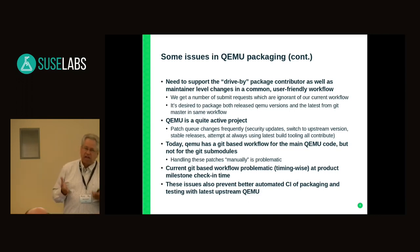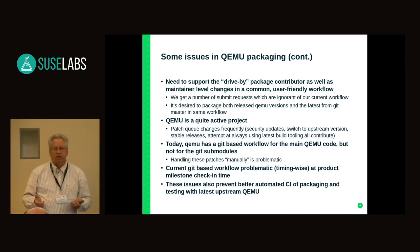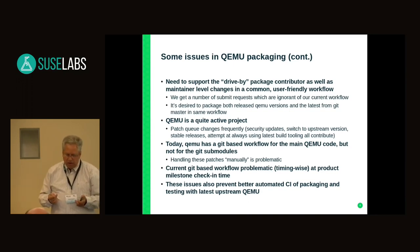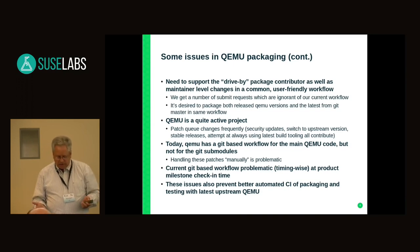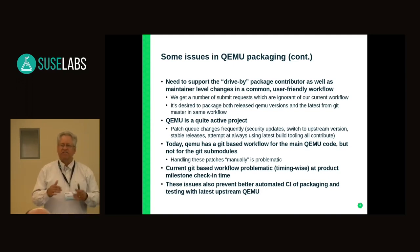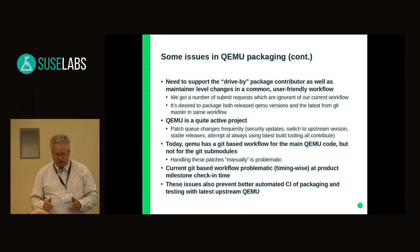QEMU is a very active project — it's complex code dealing with a lot of different layers, from hardware emulation all the way up to IO interfaces and UI things. There are a number of security updates that are always being requested. Half of our patches are related to security, plus stable releases that come along that we have to adjust to. We do use a Git database workflow for the main QEMU code, but all those sub-modules just have a static list of patches. That's been okay until recently when EDK2 was pulled in, which is a very complex piece of code, and so we want to simplify working in those sub-modules going forward.